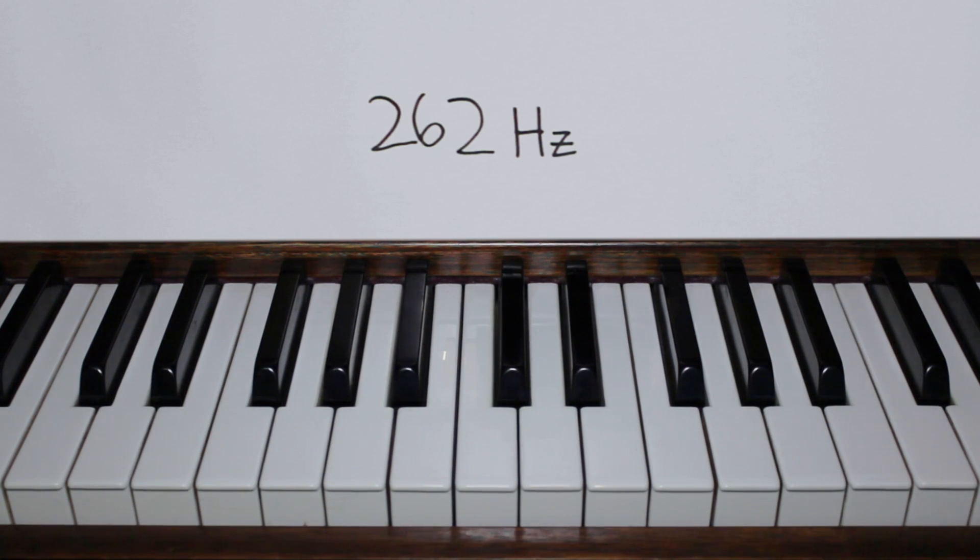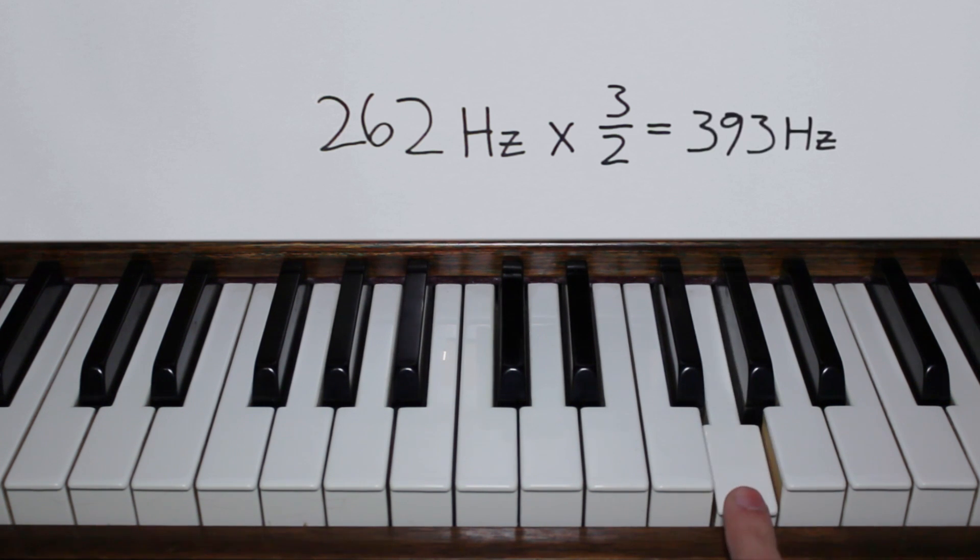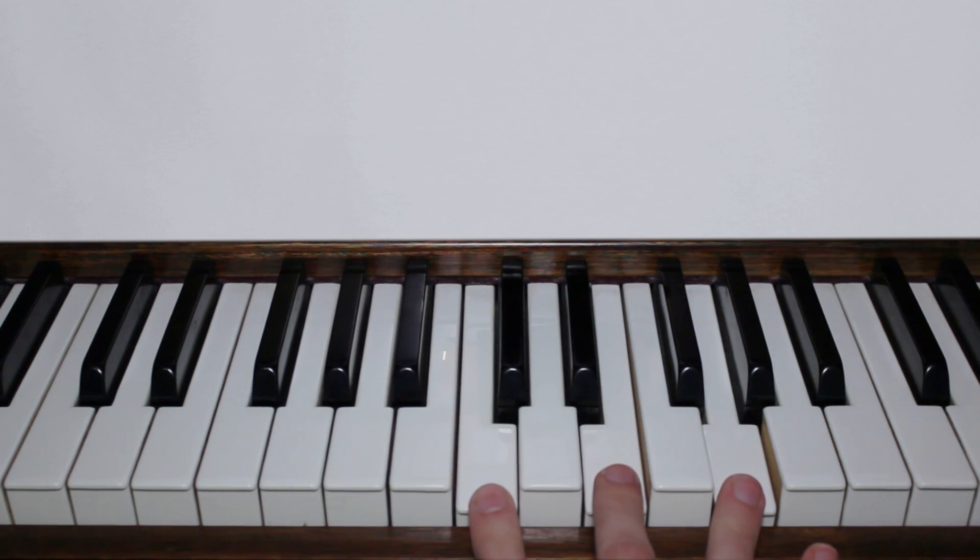Let's try some more simple fractions. Three halves of 262 is 393, this is a G. Five fourths of 262 is an E. Now we've found the fractional relationships for a major chord. All the other notes are at least somehow related and it's easy to look up their individual frequencies.